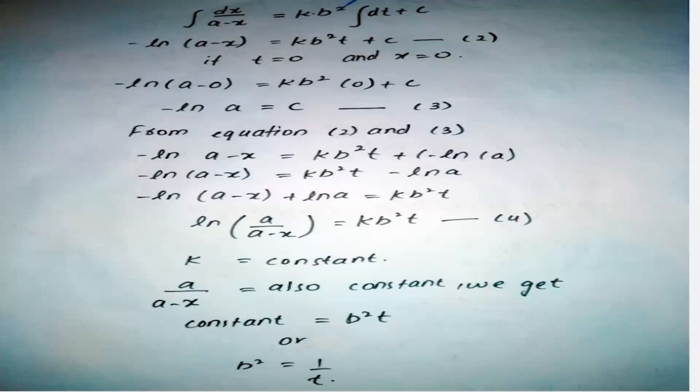Now name this equation number three. So by putting the value of c in equation number two we will get equation number four which is A/(A-x) equals K[Mg]²t.